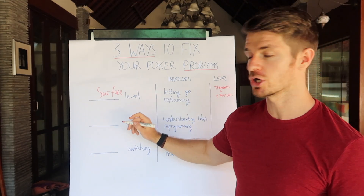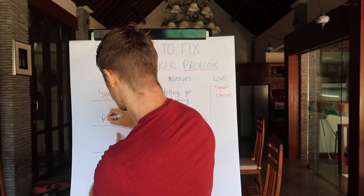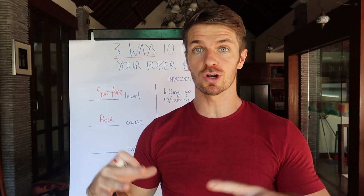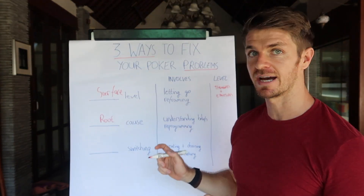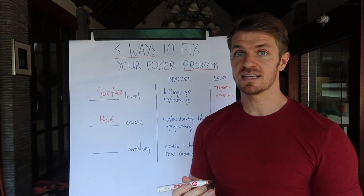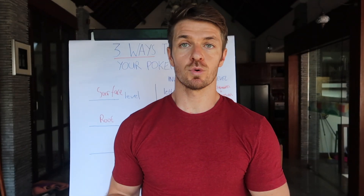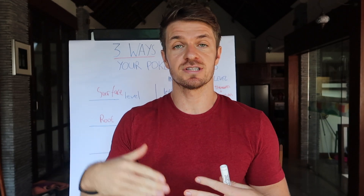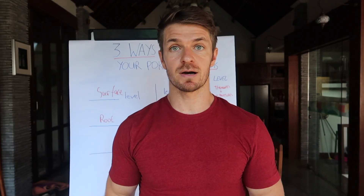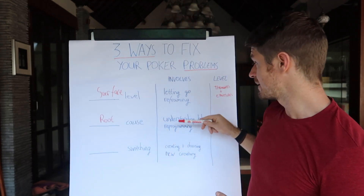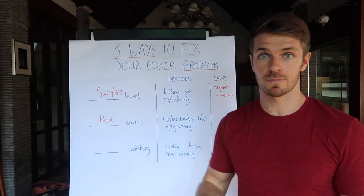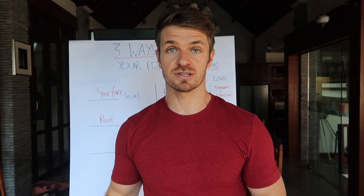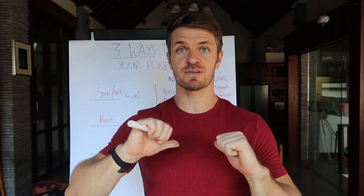The second level is the root cause. Make sure you stick around to the end of this video because I'm going to show how to incorporate all of them using analogies that will really stick. Root cause is about removing the root cause of the problem. If you're working on the surface level, problems are always going to keep coming up because you're not getting to the root — you're dealing with the symptoms. The root cause approach is about removing, understanding, and reprogramming beliefs. You've got to understand why your negative thoughts are coming up and where the problems are actually coming from.